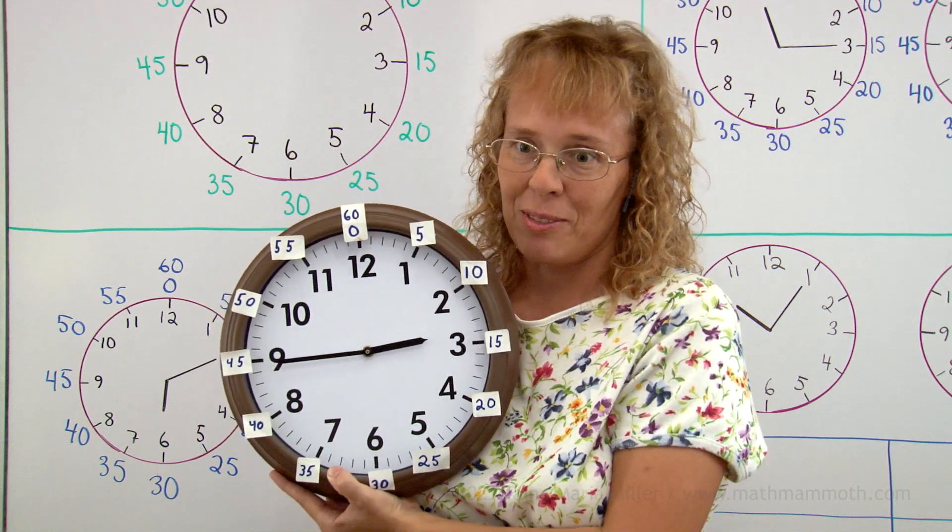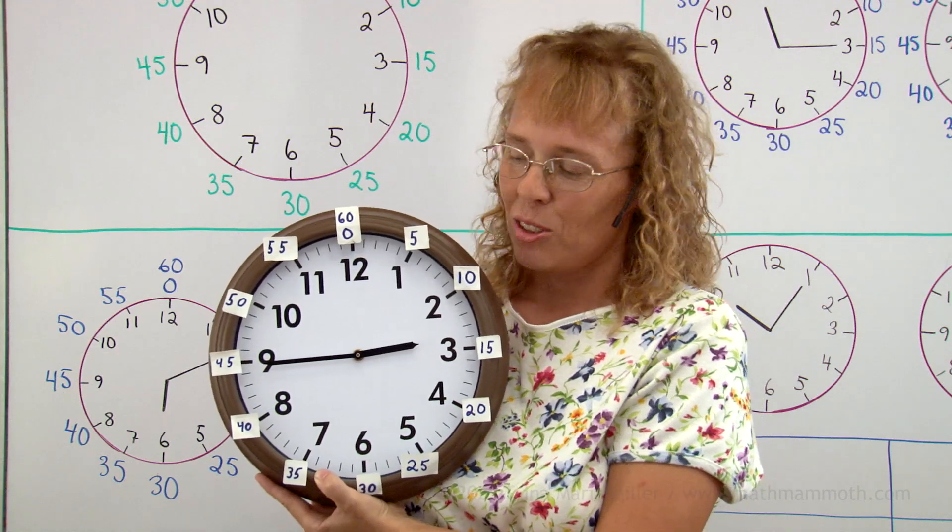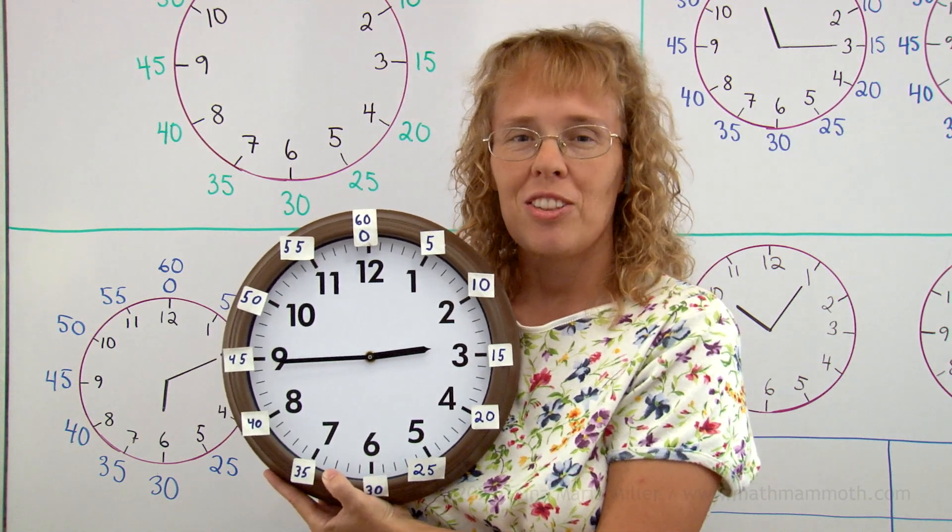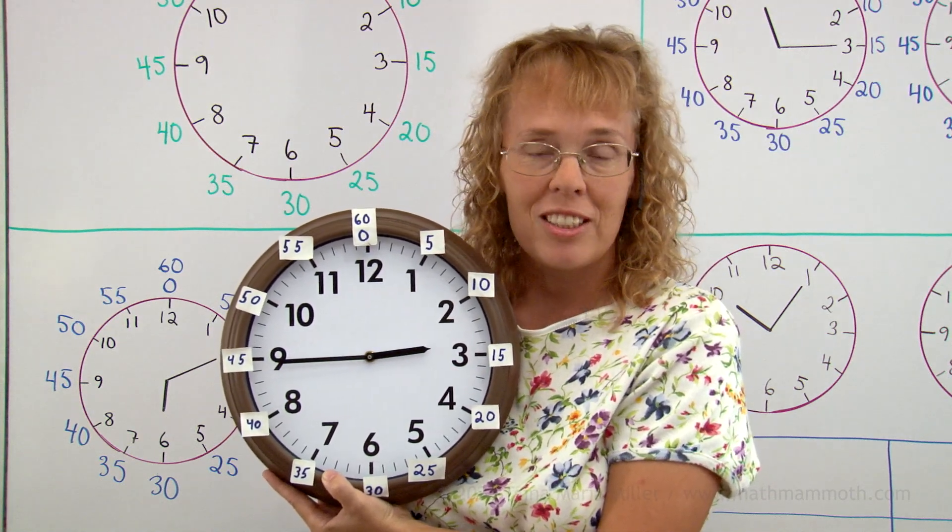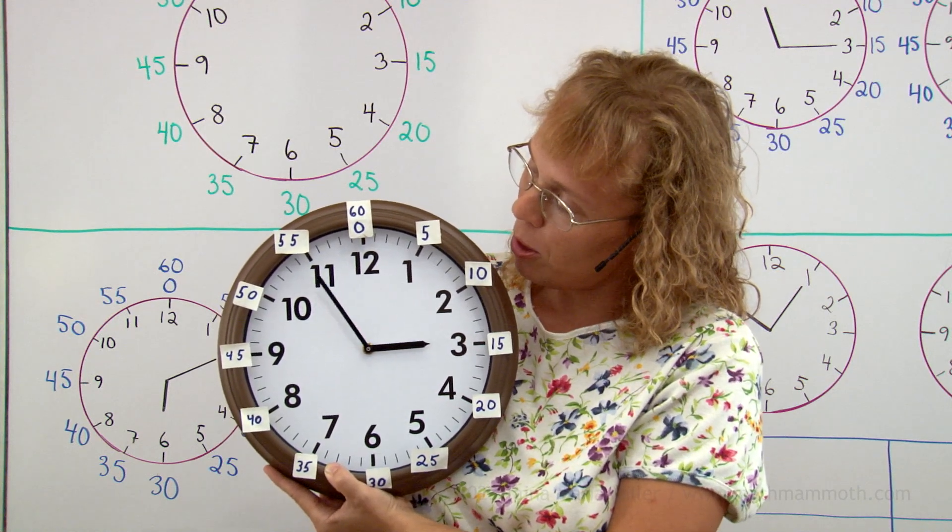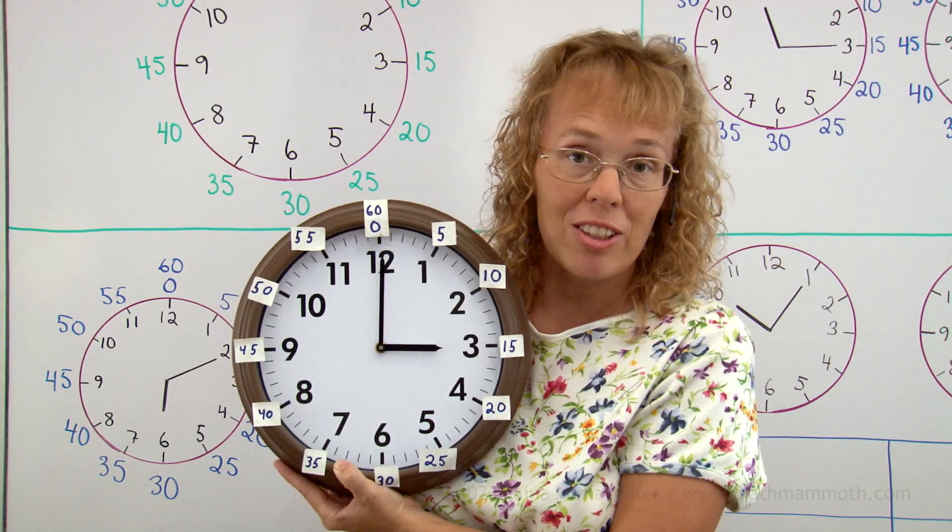Notice the hour hand now. It is getting very close to 3. So some children get mistaken and think that this is 3.45. But it is not yet. It is still just 2 hours and 45 minutes. Because the minute hand needs to go all the way up here. Finish its full round until it is actually 3 o'clock or 3 hours.